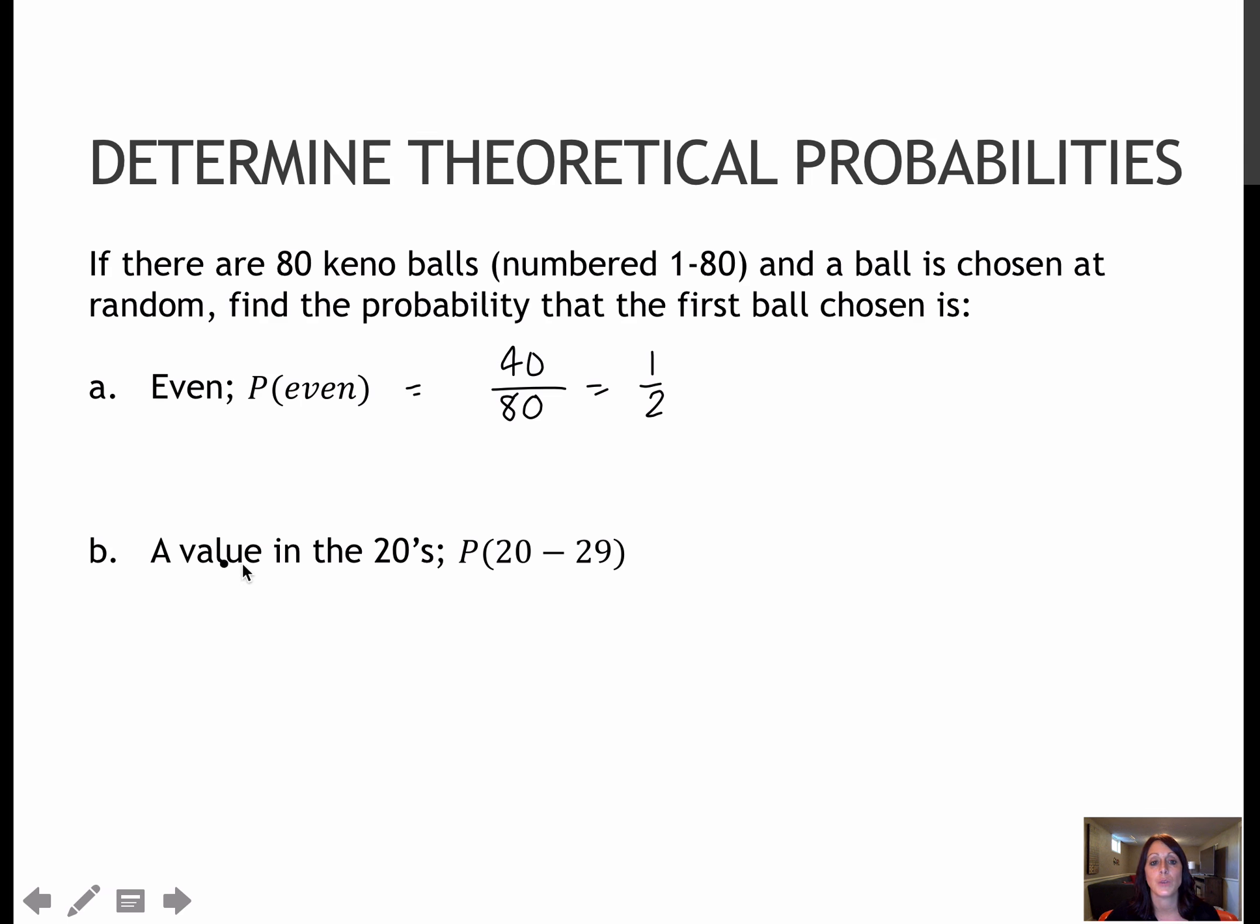The probability that the value that I choose is in the 20s, meaning that it's 20 through 29. Out of the 80 balls, there are 10 that start with a 2. So 10 out of 80 would be 1/8. Again, remember, quite often we will write that as 0.5 and 0.125. Sometimes you will see them written as percents, so 50% or 12.5%, but most often the decimal form is the way that you will be asked to find those probabilities.